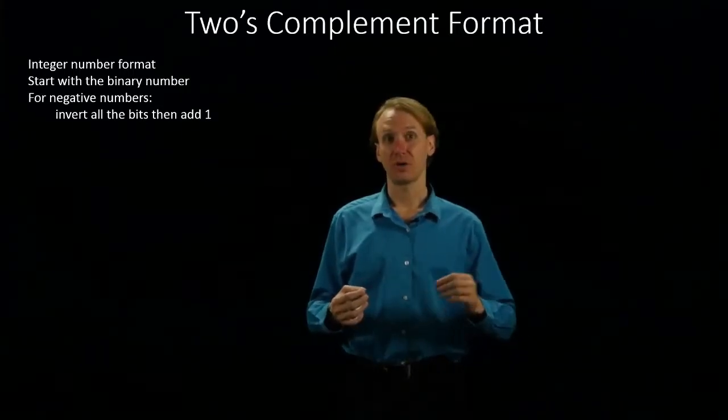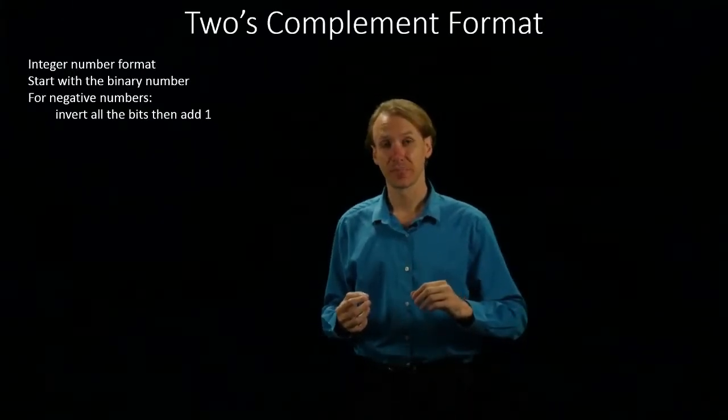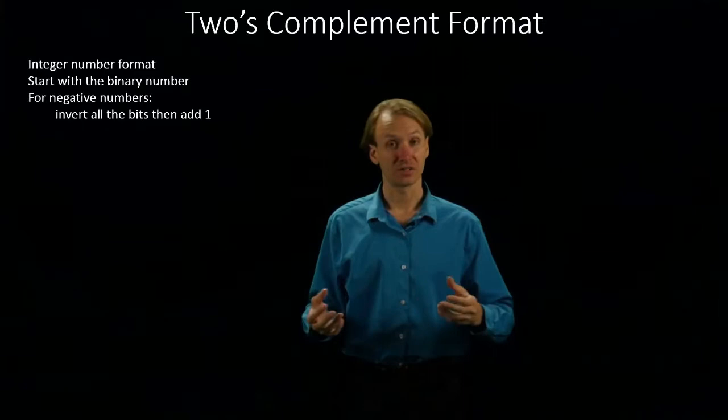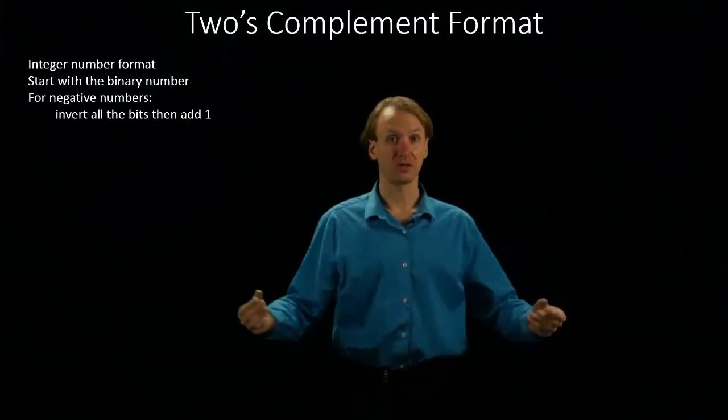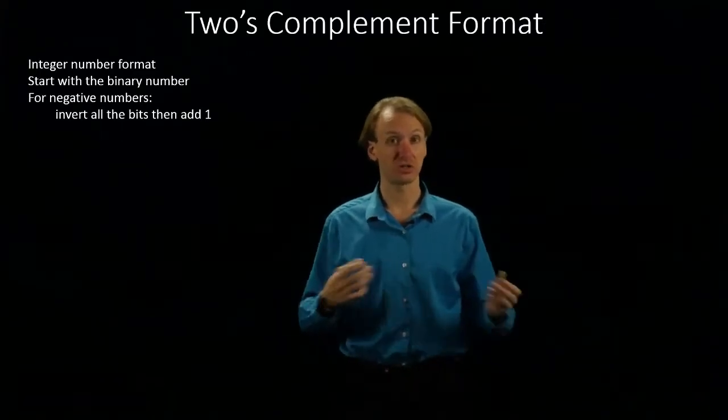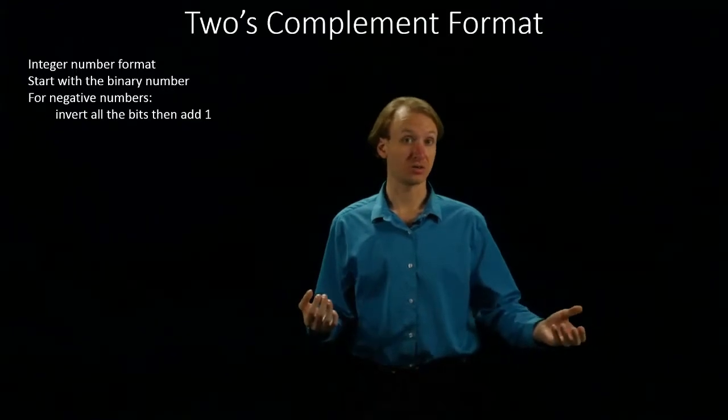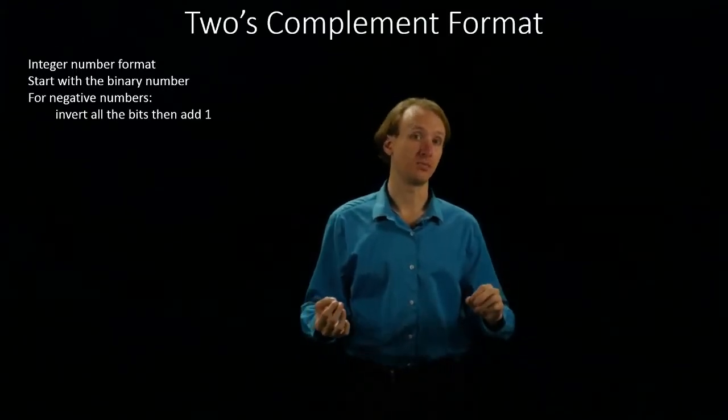The two's complement operation will allow us to convert a number between positive and negative representations, and what it will have us do is flip all of the bits in our number. So, we'll change all of our zeros to ones, all of our ones to zeros, and then go back and add one more to this number.